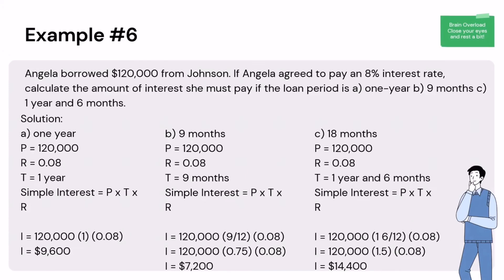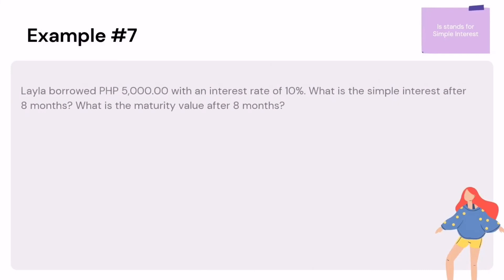Solution C — 1 year and 6 months: P = $120,000, rate = 0.08, time = 1 year and 6 months = 18 months. Using SI = P × T × R: 120,000 × (18/12) × 0.08 = 120,000 × 1.5 × 0.08 = $14,400. Therefore, Angela will pay an interest of $14,400 in 1 year and 6 months.